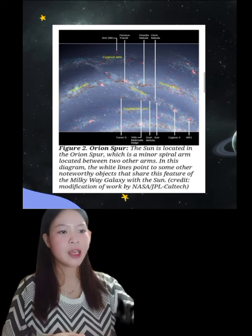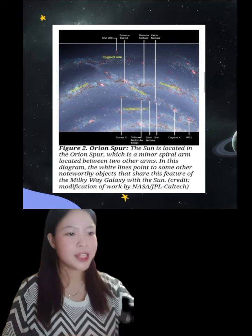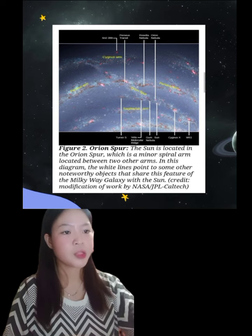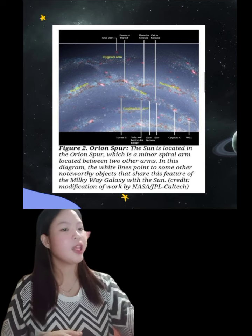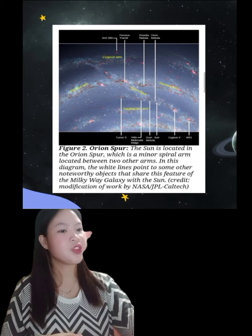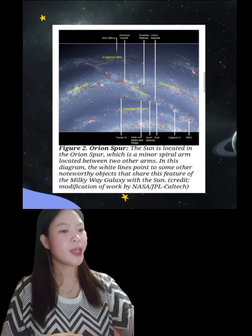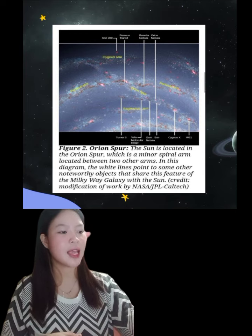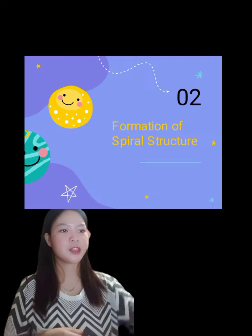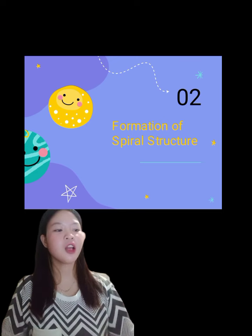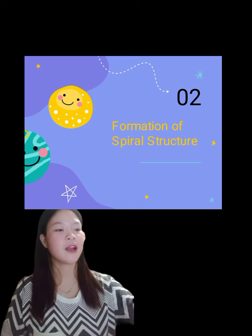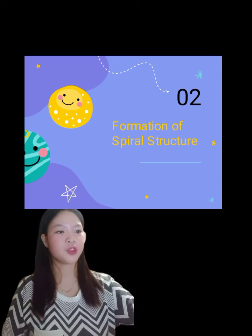In this diagram, the white lines point to some other noteworthy objects that share this feature of the Milky Way galaxy with the sun. Let's proceed to the formation of spiral structure.